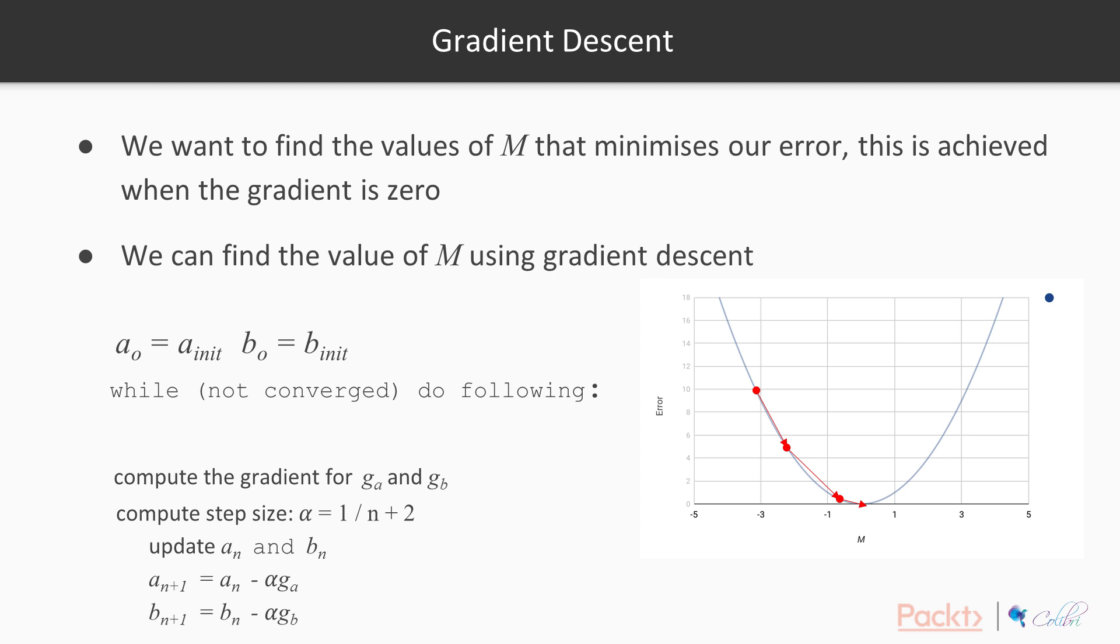So you basically start at a value, you find the direction, you find the direction of steepest descent, and then you just take a step down it. It's a bit like walking down a hill, and that's effectively what gradient descent is.